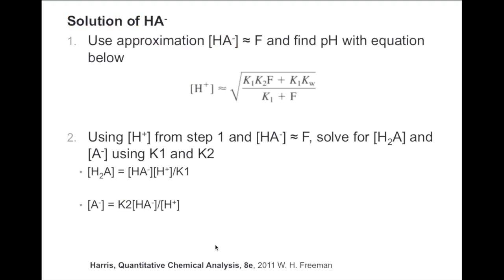For a solution of HA⁻, we use the approximation that HA⁻ is approximately equal to the formal concentration. We find the pH using the given equation — just plug and chug. Then we use that hydrogen concentration and the assumption made to solve for H₂A and A²⁻ using K₁ and K₂.